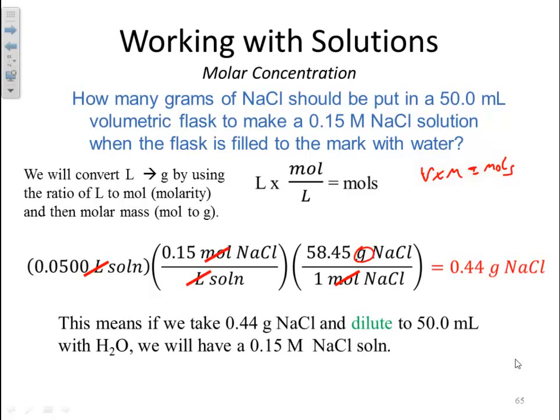This means if I take 0.44 grams of sodium chloride and dilute it to 50 milliliters with water, we'll have a 0.15 molarity sodium chloride solution. Homework 34.